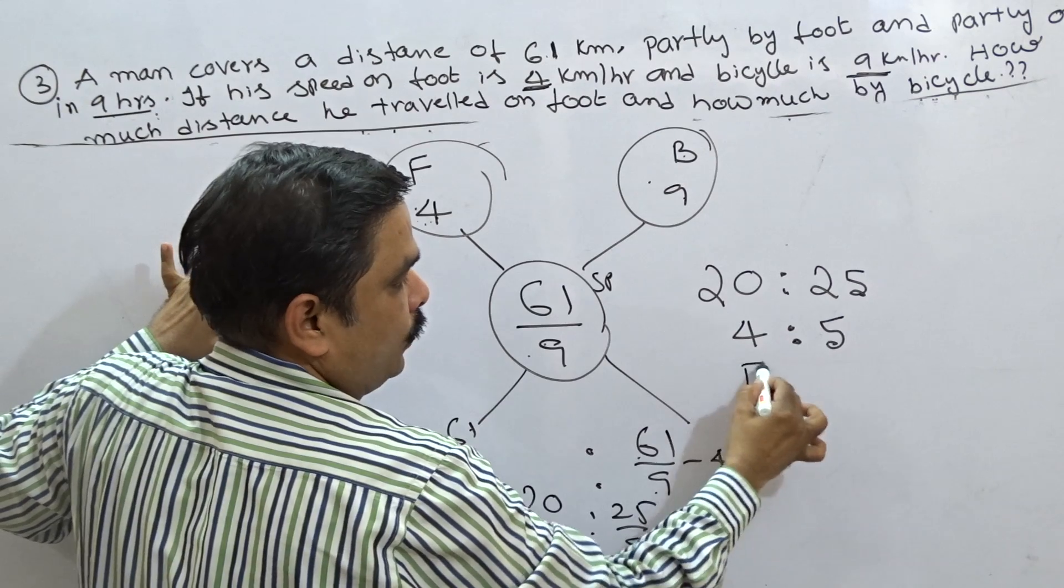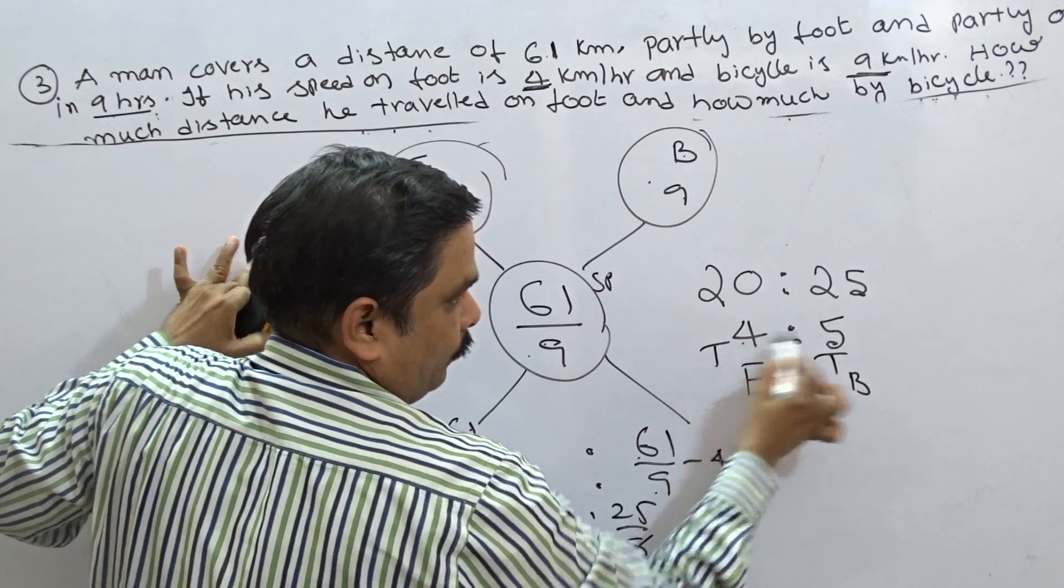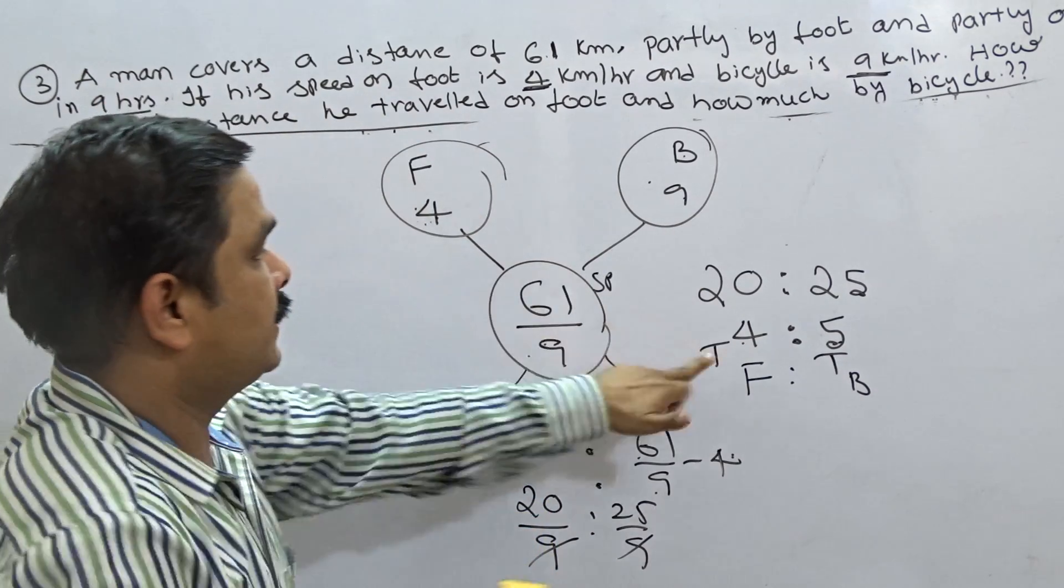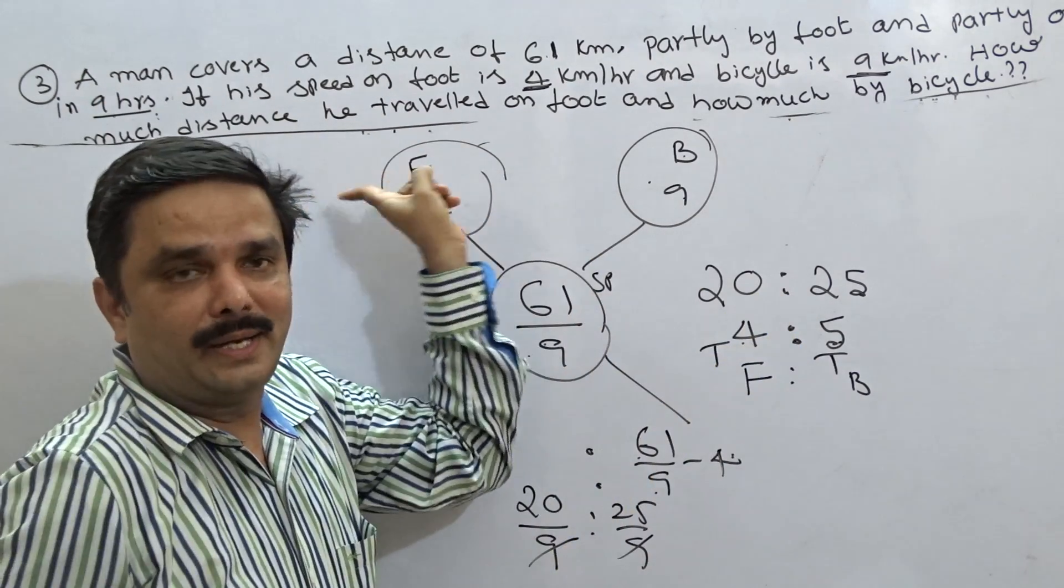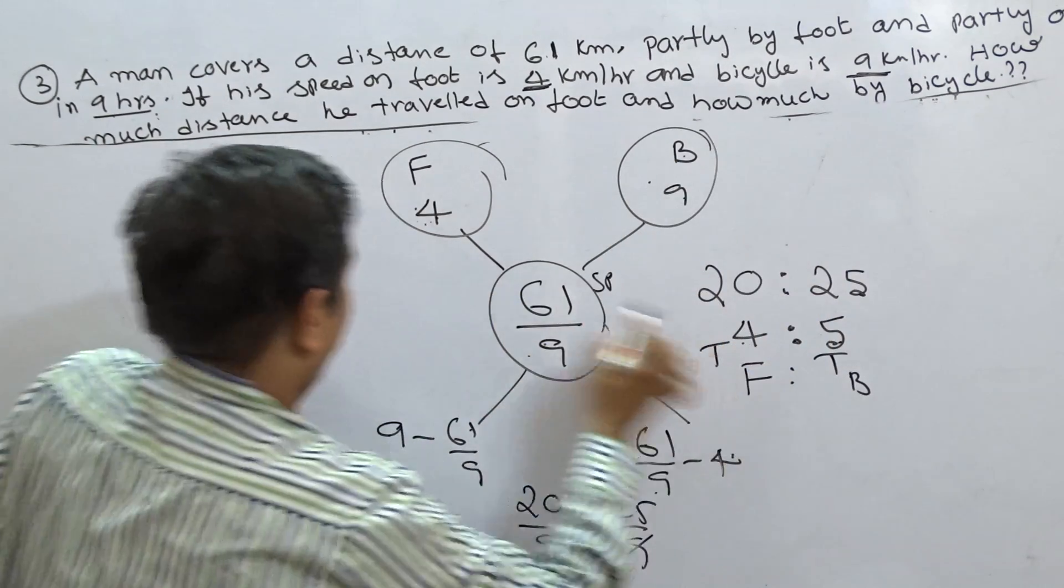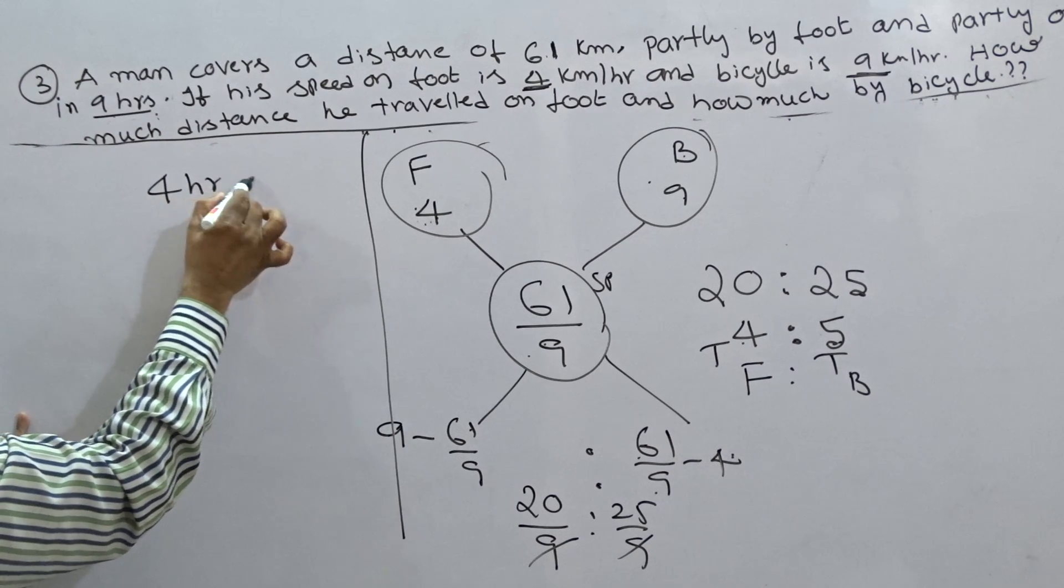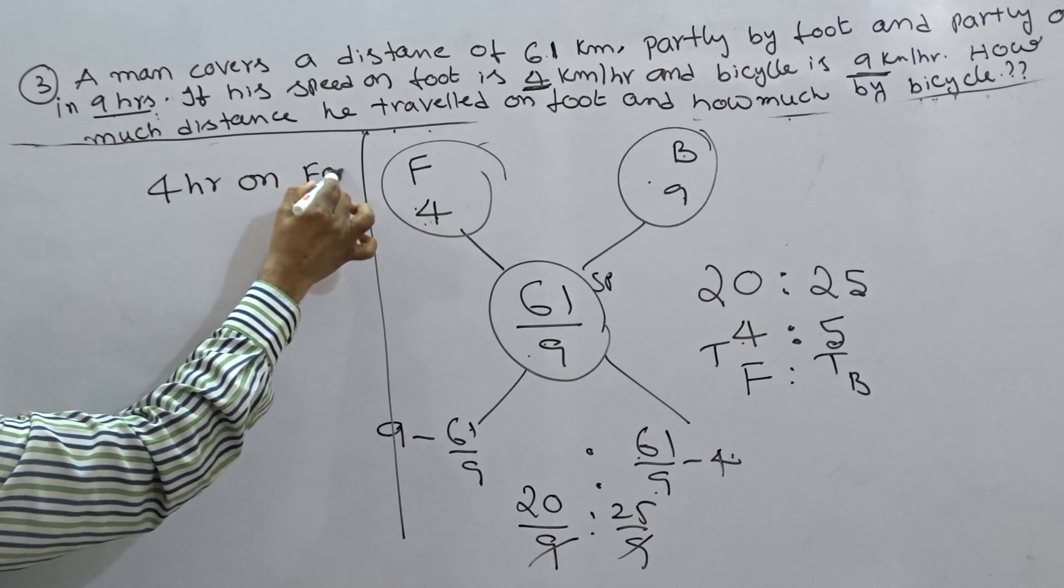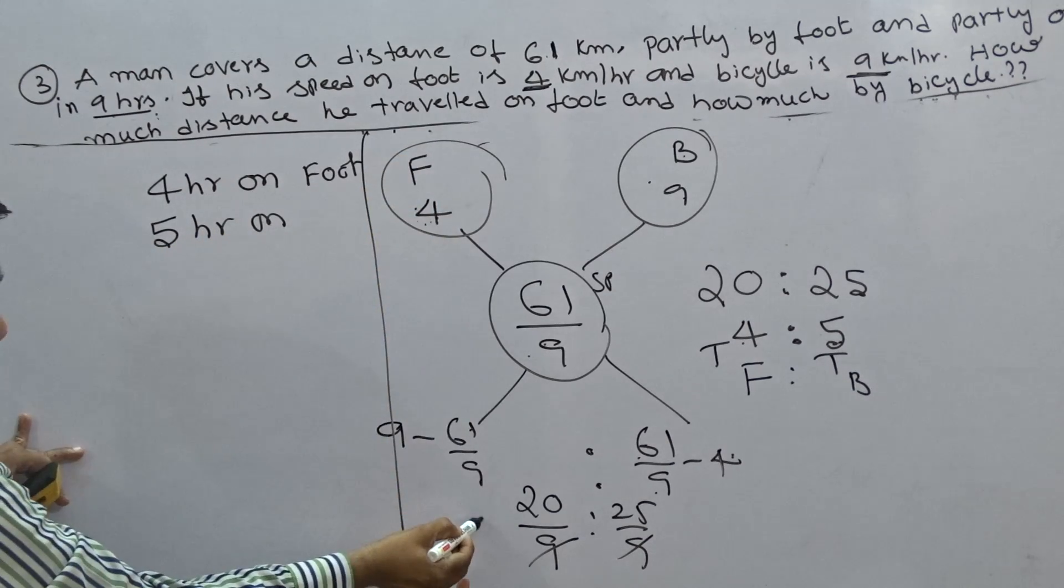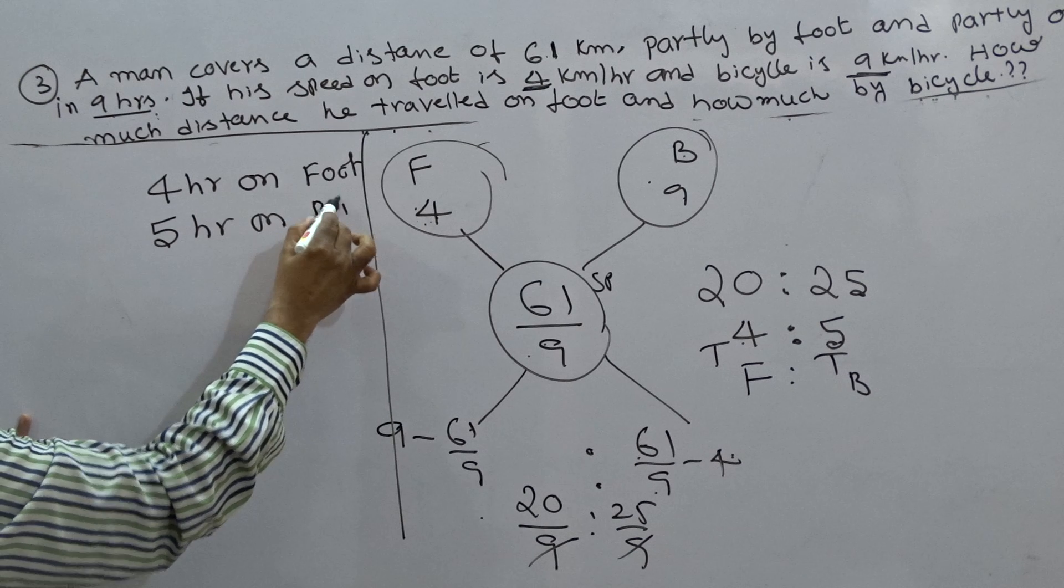This is time on foot is to time on bicycle, 4 is to 5. Now, total hours are 9. And incidentally, 4 plus 5, I got 9 means, what does it mean? Here, the meaning is, the person traveled for 4 hours on foot and he traveled for 5 hours on bicycle.